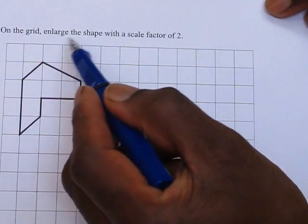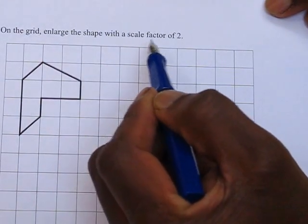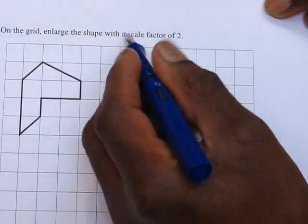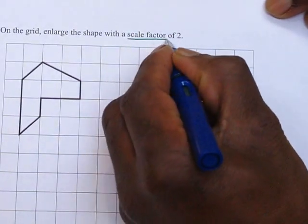On the grid enlarge the shape with a scale factor of 2. I would underline the key words scale factor of 2.